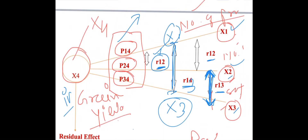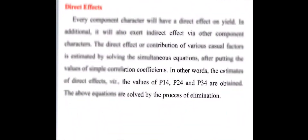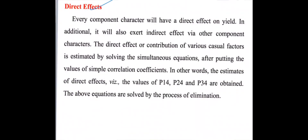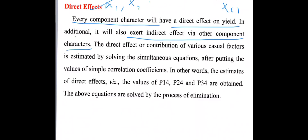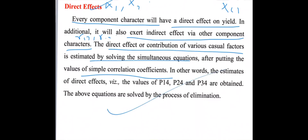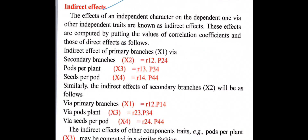Path coefficient analysis is based on three calculations: direct effect, indirect effect, and residual effect — residual effect is denoted by capital R. Each component character like x1, x2, and x3 will have a direct effect on yield x4, and also exert indirect effects via other component correlations r12, r13, r23. The direct effect or contribution of various factors is estimated by solving equations after putting the simple correlation coefficient values.